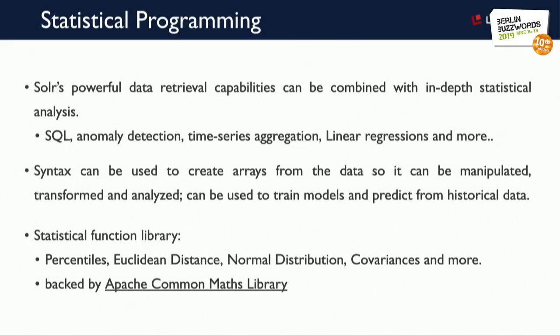What is new is statistical programming, with new functions being added every week and month. Solr's powerful data retrieval capabilities can now be combined with in-depth statistical analysis. You can perform covariances, correlations, calculate Euclidean distance, plot Gaussian and normal distributions, and much more. The syntax creates arrays which can be manipulated, transformed, and analyzed. You can train machine learning models, predict from historical data, and all of this is backed by the Apache Commons Math library.